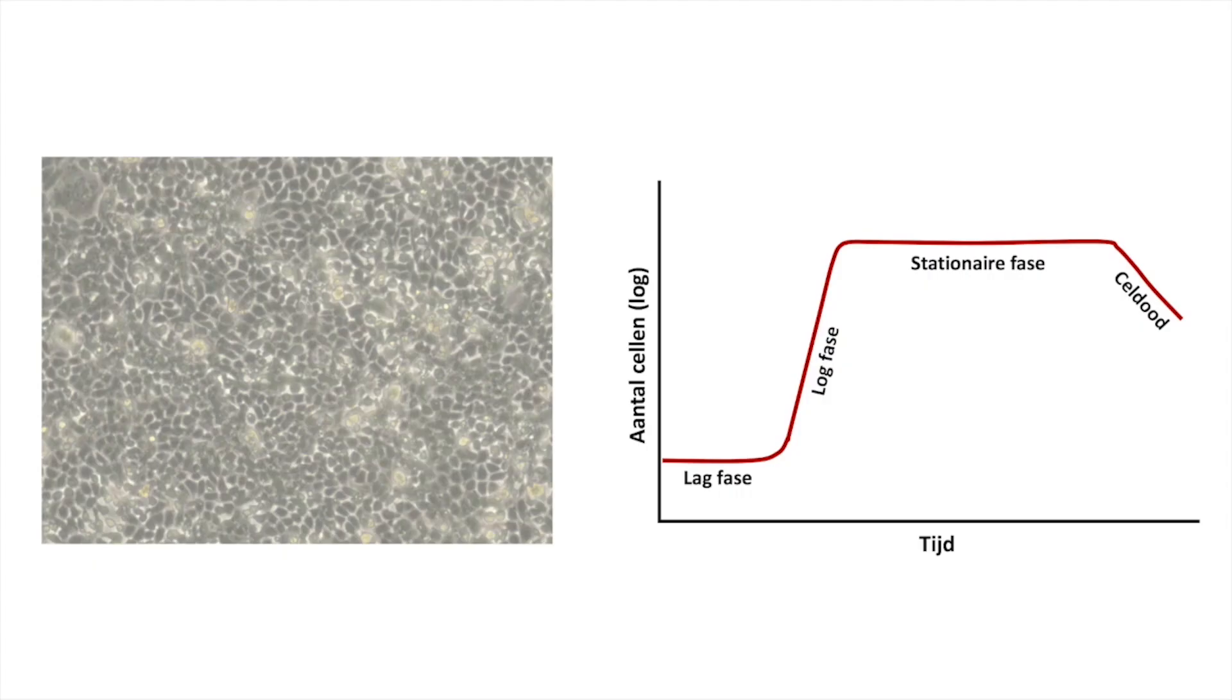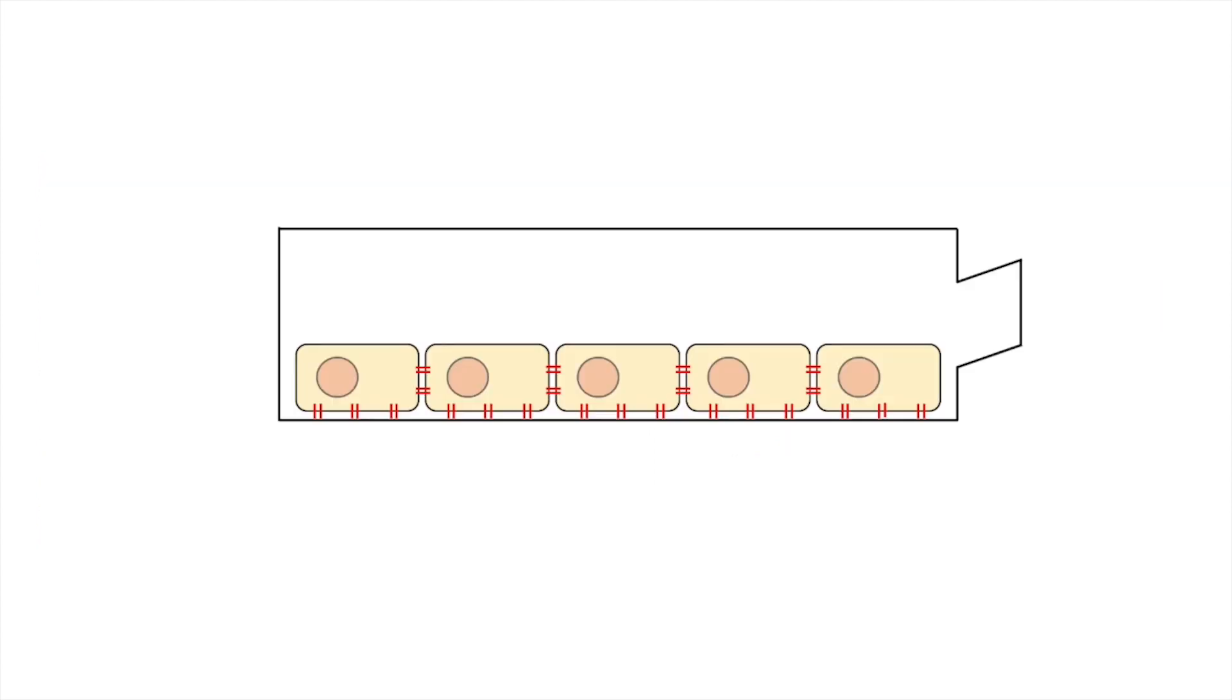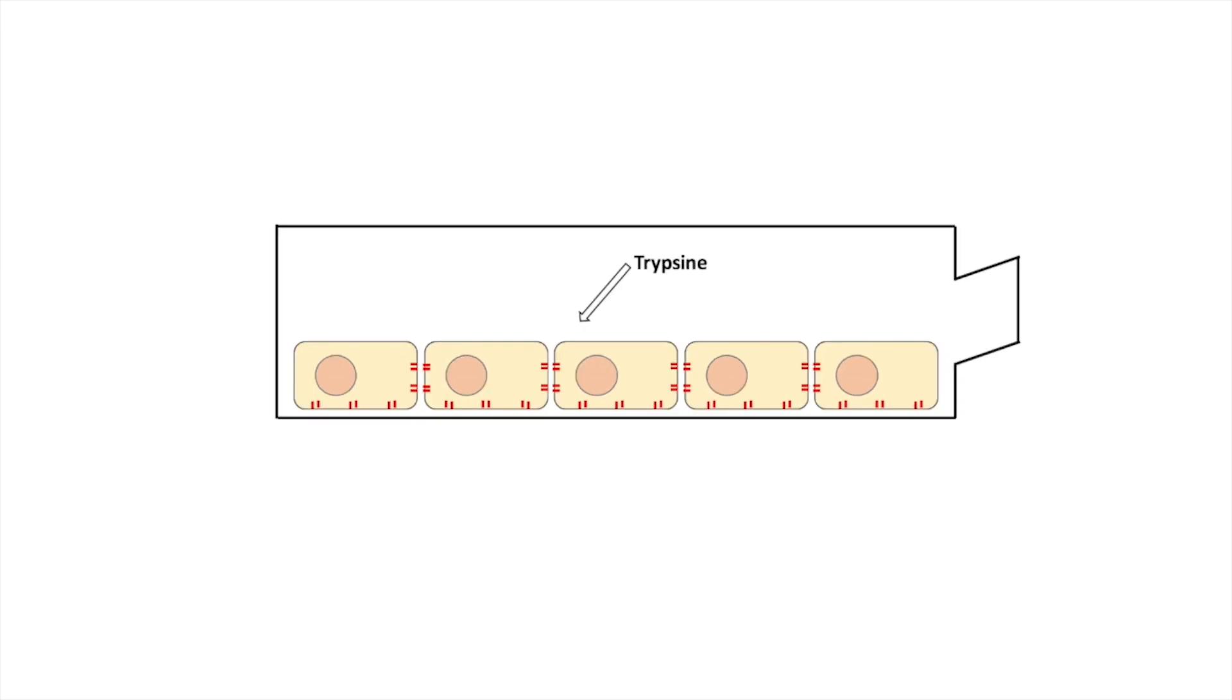Because the culture flask is confluent, the cells must be transferred to a new flask, also known as passaging the cell line. Because you are working with adhesive cells, the proteins that allow cells to adhere must be cleaved using the enzyme trypsin. The medium contains FCS, which reduces trypsin activity. Therefore, the cells first need to be washed with PBS to remove the culture medium containing FCS.